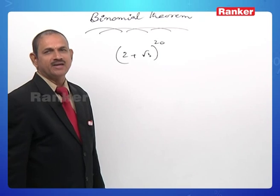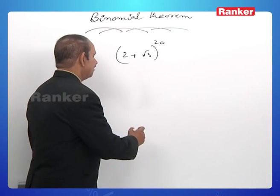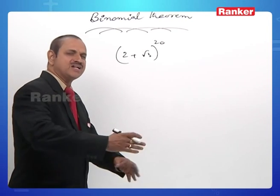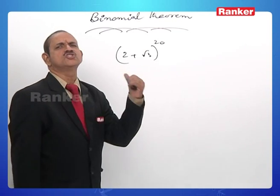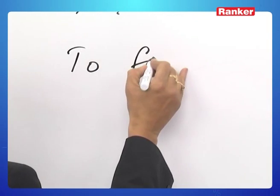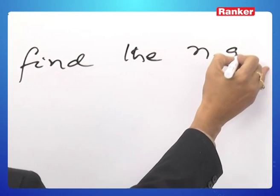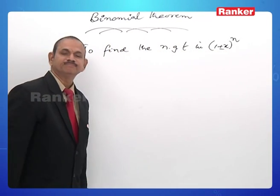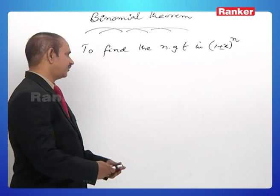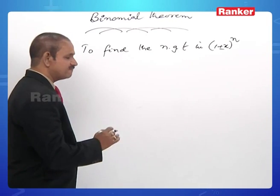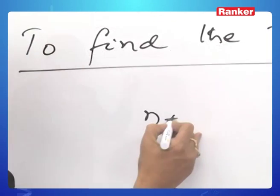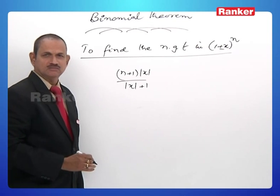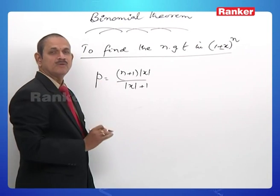A very good procedure has been designed. Let us have that in the form of a formula or a pre-designed procedure. To find the numerically greatest term (NGT) in (1+x)^n or (1−x)^n — that is the standard expansion — the very first step is to find p = (n+1)|x| / (|x|+1). You name it p.